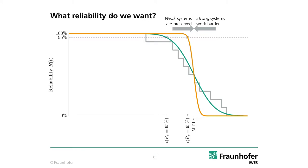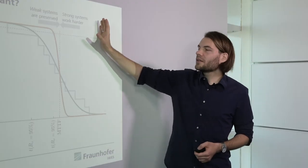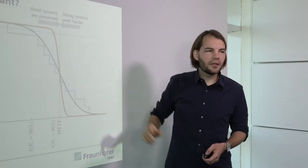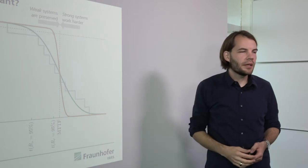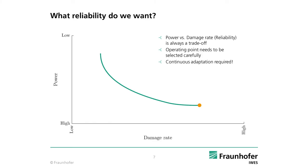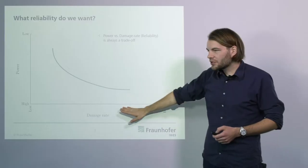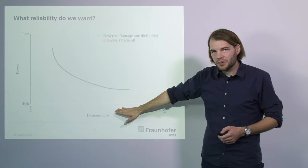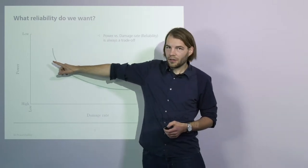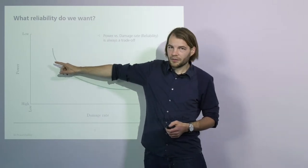That allows us to create individual operating strategies for each individual turbine and use up the fatigue damage budget that each individual turbine offers. If we look at the operation of a wind turbine, we can see that we always have to select the trade-off between the damage rate that we induce in the turbine and the power that we get out of the turbine.